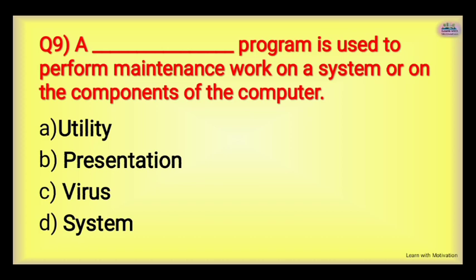Next: Dash is a program used to perform maintenance work on a system or on the components of a computer. This program keeps the computer maintained and helps maintain its parts. Options: Utility, Presentation, Virus, or System. The right answer is Utility — normally utility means cleaning. Software that helps clean your computer is utility software. Examples of utility software: Disk Cleanup, Disk Defragment, and Antivirus.